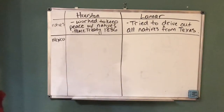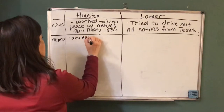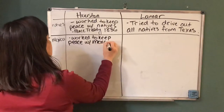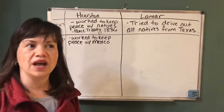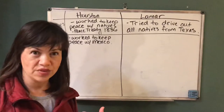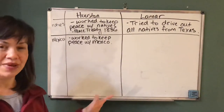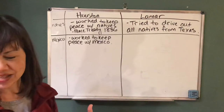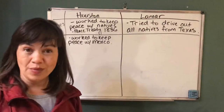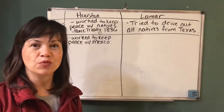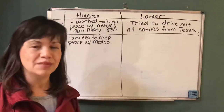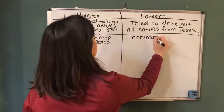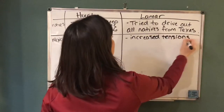The next category is Mexico. Sam Houston worked to keep peace with Mexico — when other people who came late to the revolution still wanted to fight Mexico, Houston did not want that and worked to maintain peace. Mirabeau Lamar, on the other hand, did things to aggravate tensions. He sent the Texas navy to help rebels who were rebelling against the Mexican government, sending them into Mexico, which increased tensions with Mexico significantly.